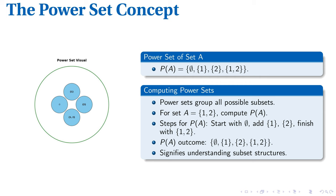To compute P(A), we first include the empty set, then the individual elements {1}, {2}, and finally the full set {1, 2}. All these subsets combined give the power set P(A) = {∅, {1}, {2}, {1, 2}}. By determining power sets, we gain a deeper understanding of the structure of sets and their possible combinations.